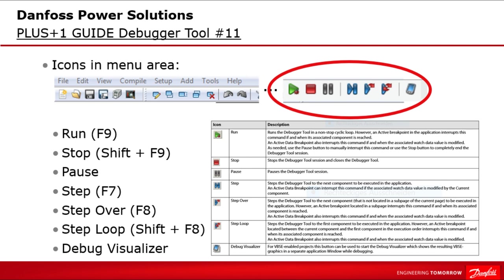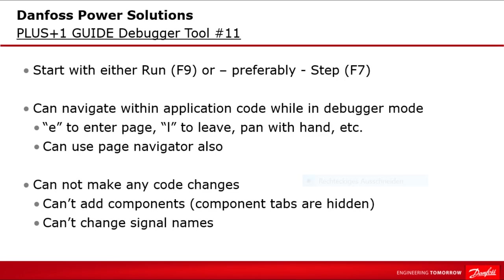As a tip for first-time users, use the step button to stop execution at the earliest position inside the application. A test folder will be created after starting the debugging process where debug mode settings — including active breakpoints, watch variables and any settings — will be stored and available for further debugging sessions. During debugger mode the general Guide interface is the same; you can navigate the application and use the page navigator. However, you are not allowed to make code modifications, move, copy, add or change signal names, since that would require a recompile.